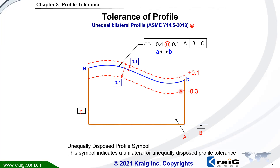The tolerance will be plus 0.1 and minus 0.3. Why? The first one, you move outward 0.1 — this is plus 0.1. Next, you move inward 0.4, and totally from here to here is 0.4. Since you already moved outward 0.1, that's why you get minus 0.3. So the keyword here is: 0.1 you move outward, then 0.4 from outward you move inward.